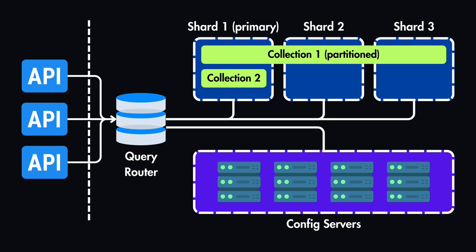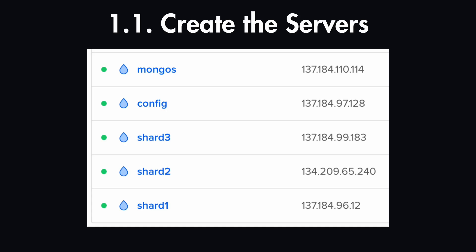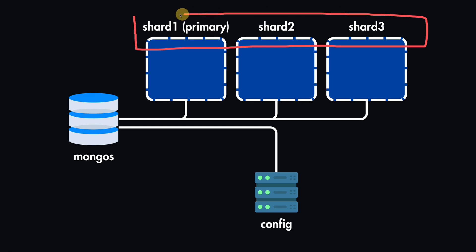Now that we understand the architecture of MongoDB sharding, we can get started with the first step: setting up the MongoDB servers. You can do this on any virtual server, like AWS EC2 or DigitalOcean servers. We need to create five droplets: three will be for the shards, one will be the configuration server, and one will be the query router, which is called mongos. So the first droplet is for the query router, the next is the configuration server, and then we have the three shards where we will partition our data.